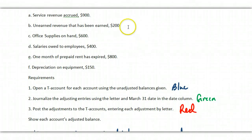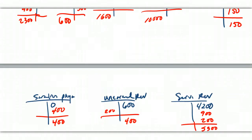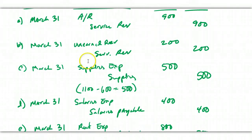Unearned revenue that has now been earned, $200. So March 31st, I debit unearned revenue $200. So I'm lowering the liability and I'm crediting service revenue because I've now earned it for $200.